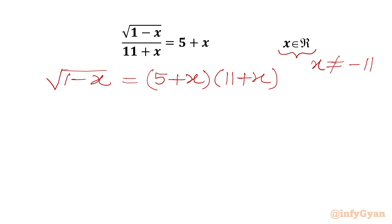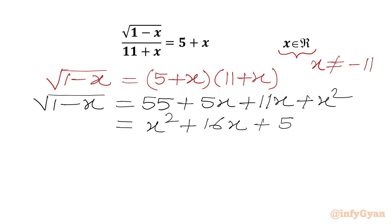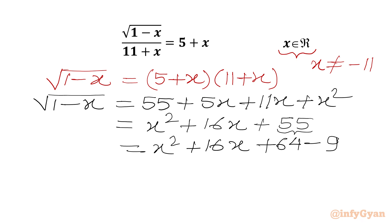Now I will simplify our RHS. So I can write square root of (1 minus x) equal to 5 times 11, which is 55, plus 5x plus 11x plus x squared, or we can write x squared plus 16x plus 55. We can split 55 as 64 minus 9. From the first three terms x squared plus 16x plus 64, we write this as (x plus 8) whole squared.